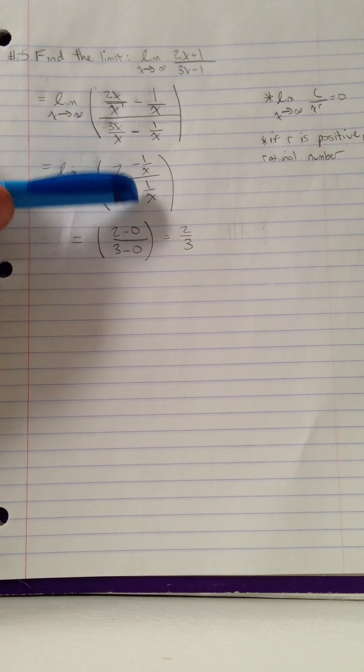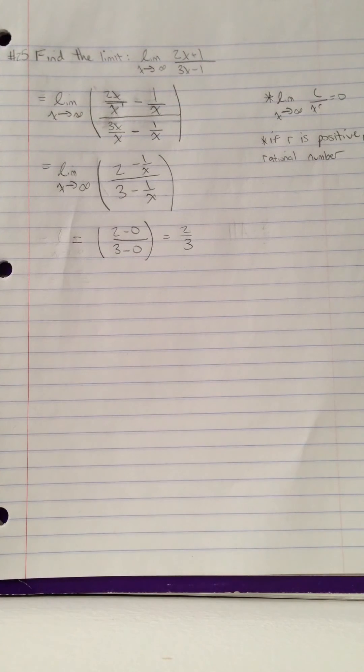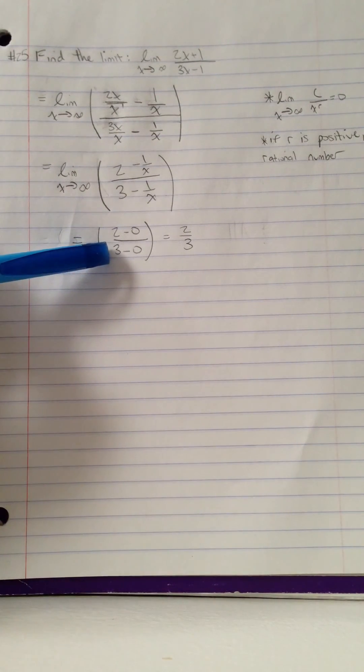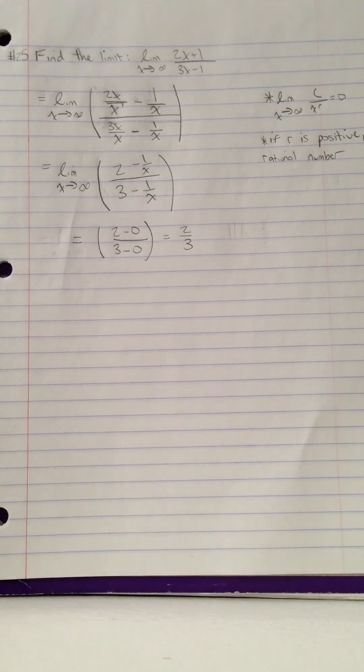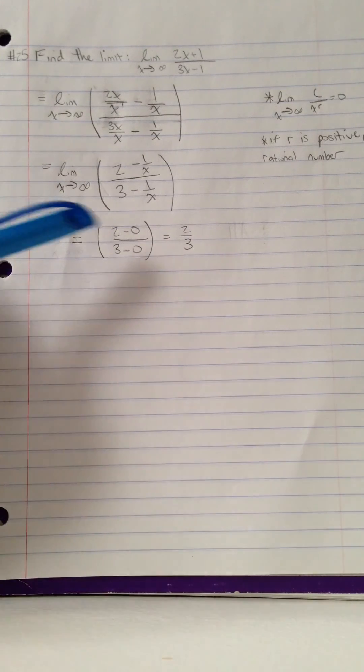So 1 over x and 1 over x will become 0, giving you 2 minus 0 divided by 3 minus 0 with the final answer of 2 thirds.